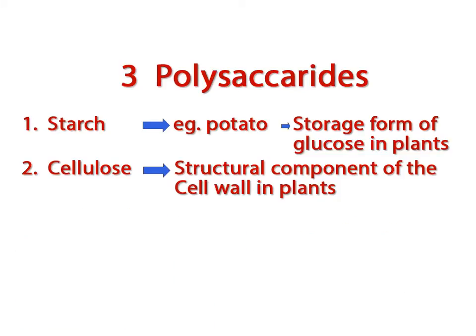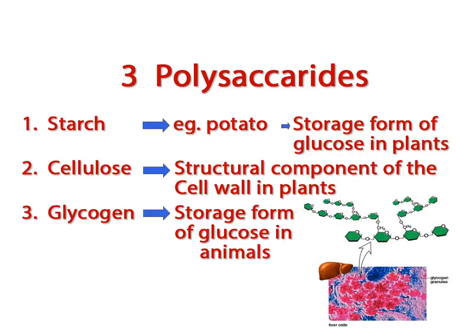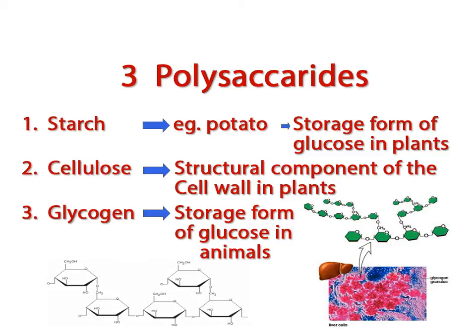The third polysaccharide is called glycogen. Glycogen is the storage form of glucose in animals, and we can recognize a diagram of glycogen as a long chain of monosaccharides bonded together with many side branches off of it.